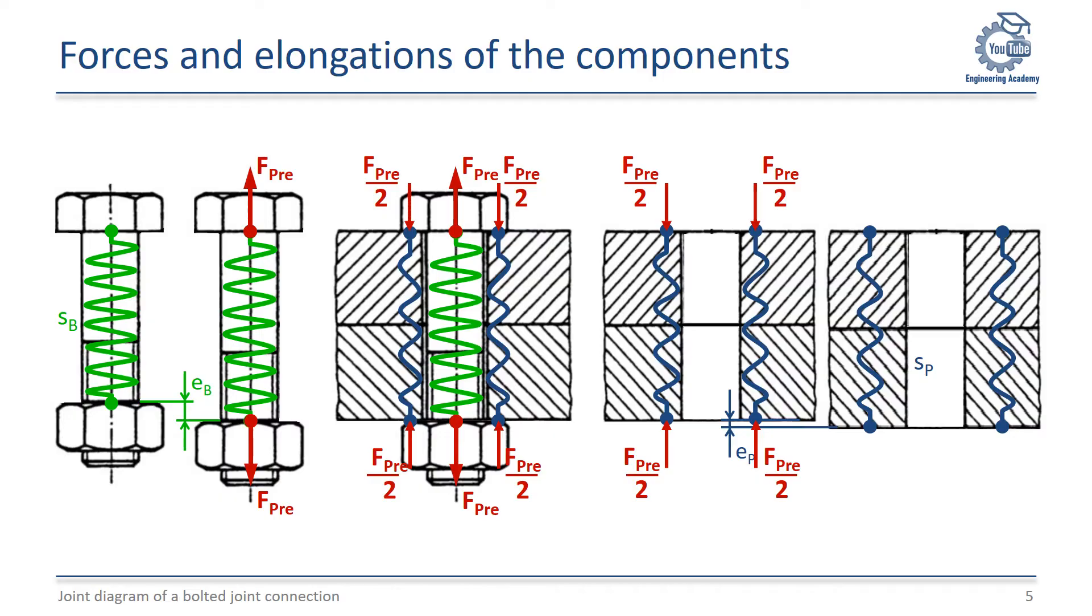Because of their linear elastic deformation behavior, the components can be seen as springs. The bolt is represented by the green spring with its stiffness SB. It is extended by the pretension force to the elongation EB. The plates are represented by the blue spring with its stiffness SP. It is compressed due to the pretension force by EP.